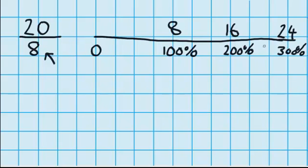So, you can see from my number line here, that halfway between 200 and 300 is 250%, and halfway between 16 and 24 is 20.